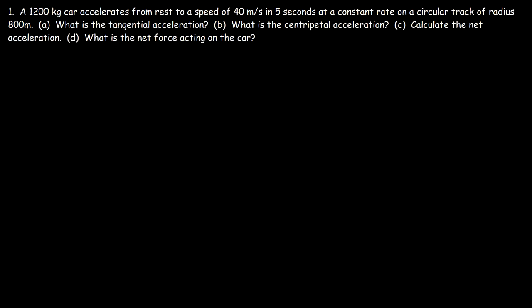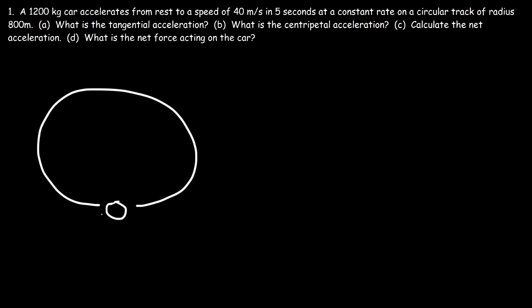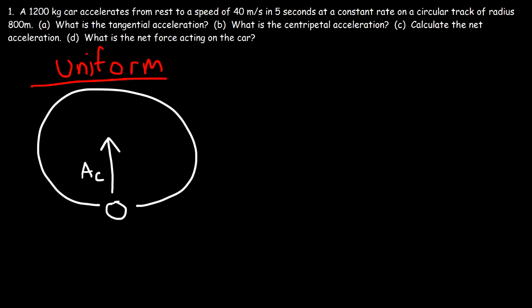In this video we're going to talk about non-uniform circular motion — what is it exactly and how is it different from uniform circular motion? In uniform circular motion, an object moves in a circle at constant speed, so there is a centripetal acceleration. The key word is constant speed.